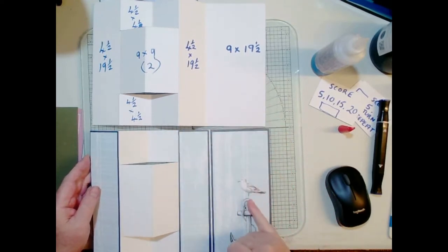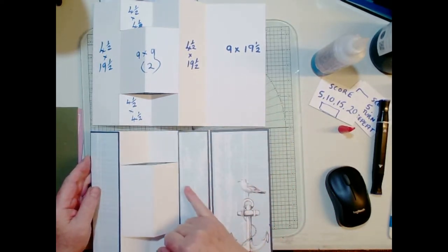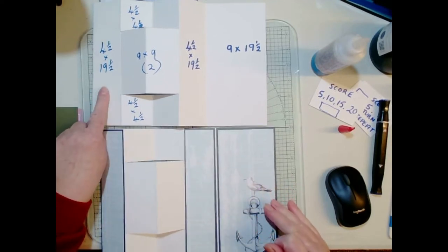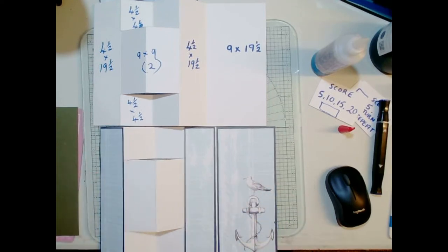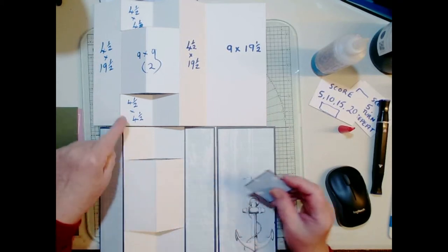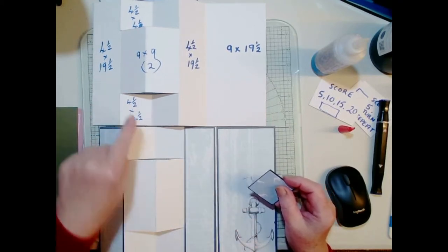Now I have got some smaller panels. Right so we've got 9 by 19 and a half, 4 and a half by 19 and a half, 4 and a half by 19 and a half, which are those three panels that are all in place. Now each of these four small ones are 4 and a half by 4 and a half.